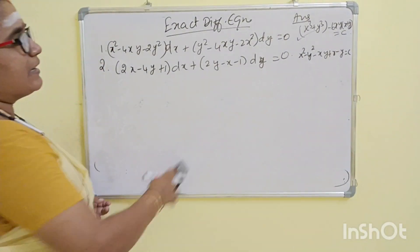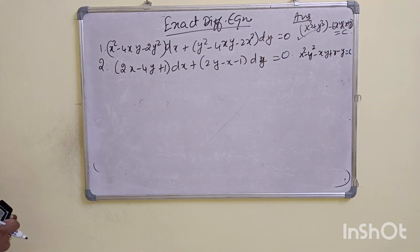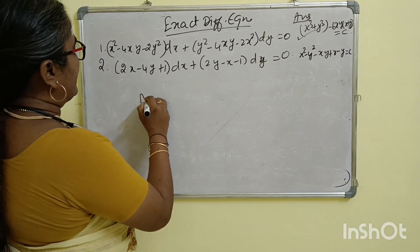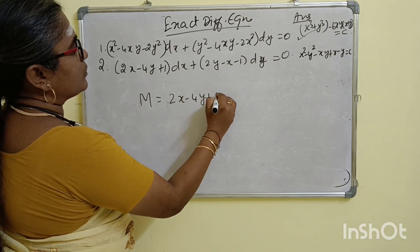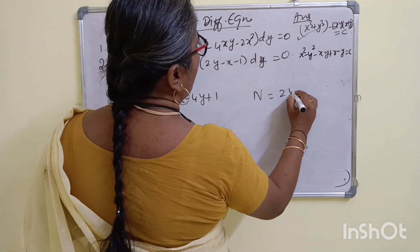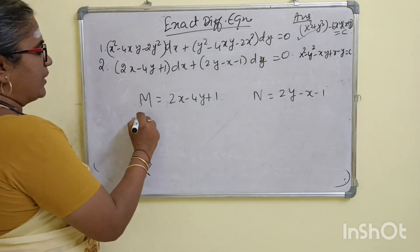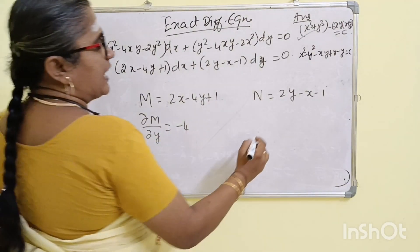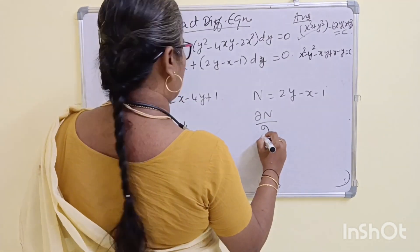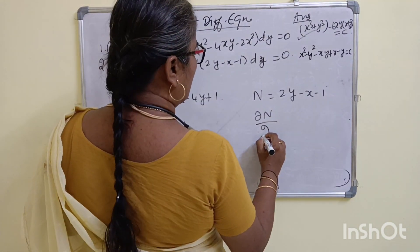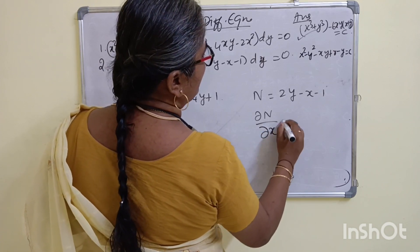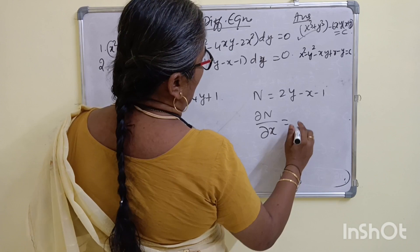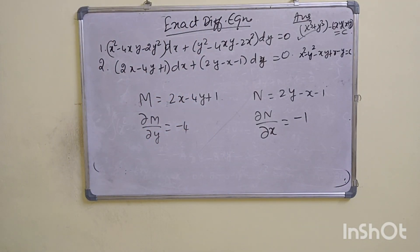The term not containing x in N. For a second example: M is 2x minus 4y plus 1, and N is 2y minus x minus 1. ∂M/∂y equal to minus 4. ∂N/∂x equal to minus 1. Minus 4 and minus 1 are not equal.